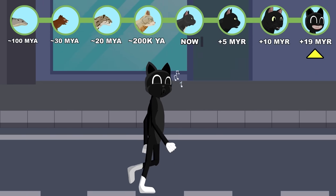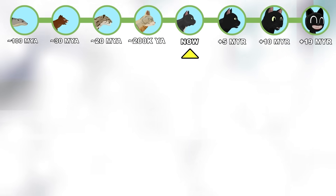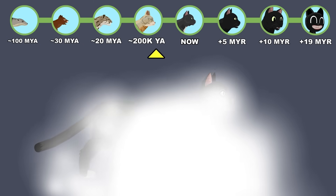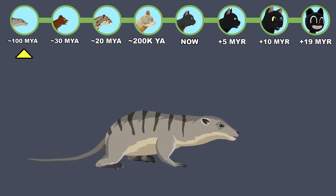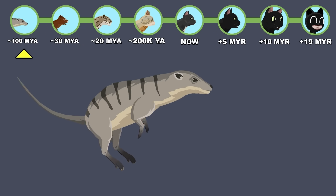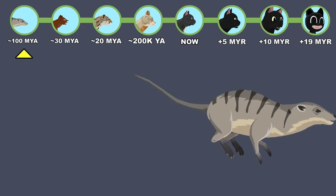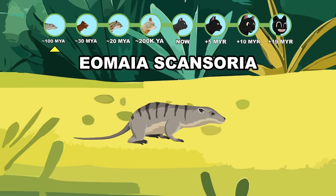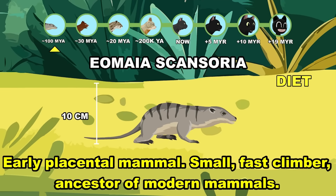From a terrifying, reality-twisting cartoon creature to a small, insect-eating early mammal ancestor — what happened if Cartoon Cat evolved from natural selection? Eomiascansoria: small, fast climber and the earliest placental mammal.